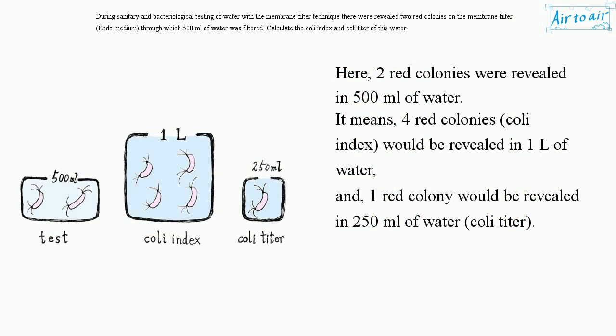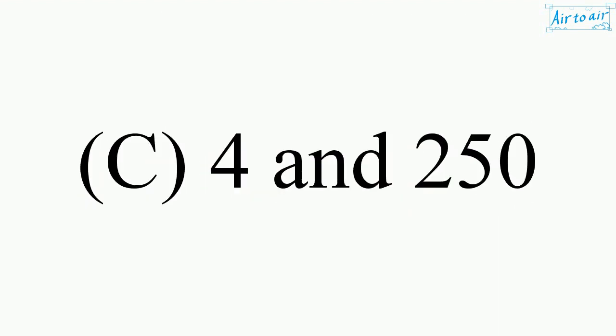For red colonies, coli index would be 4 — revealed in 1 litre of water — and 1 red colony would be revealed in 250 milliliters of water, which is the coli titer. The answer is C: 4 and 250.